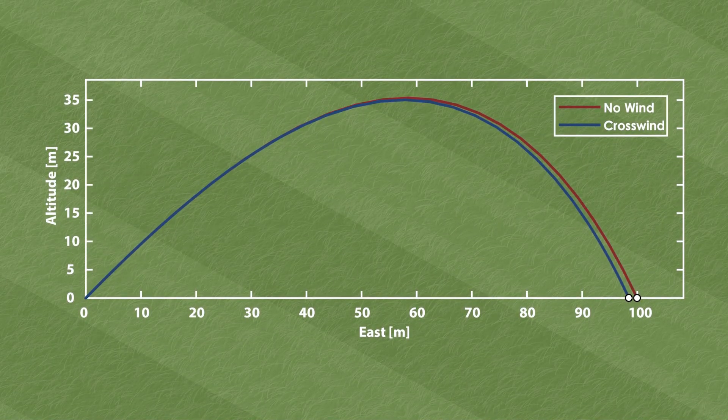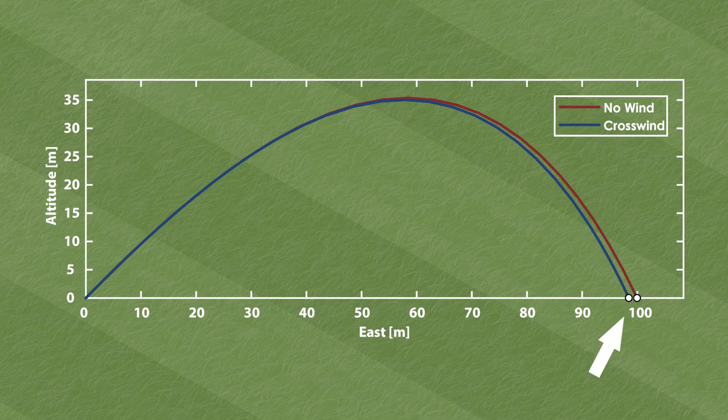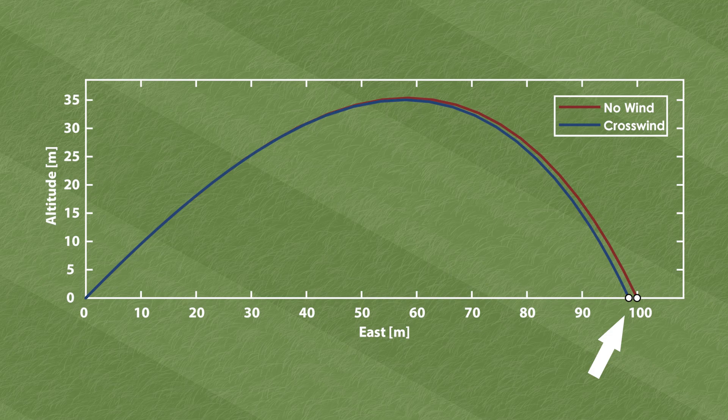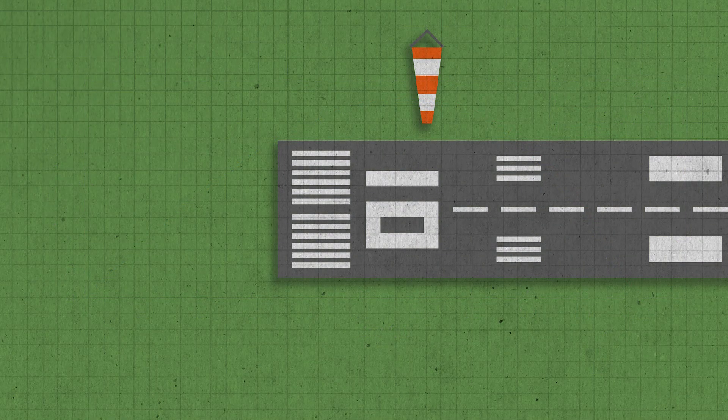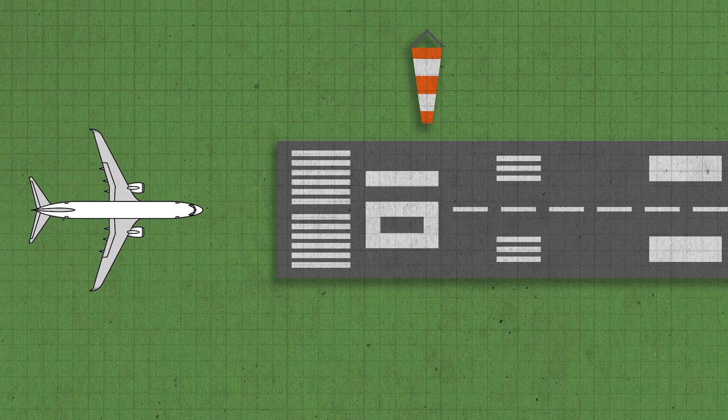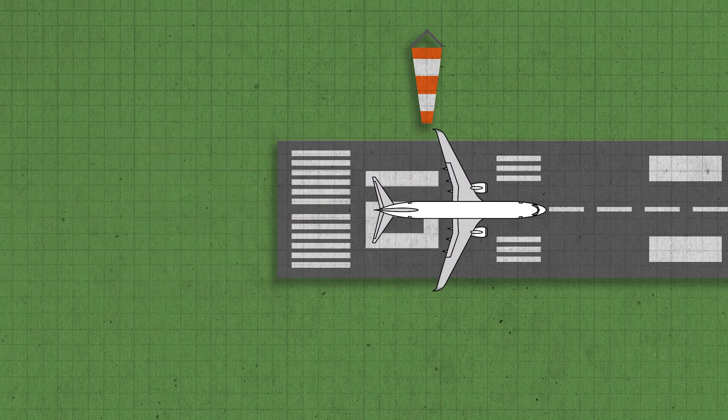Now, you may still be struggling with the original problem, where a crosswind decreased the distance down the fairway. But fortunately for you, I have another example. Let's replace the golf ball with a plane flying straight down a runway. With no wind, it just points forward and moves in a straight line.